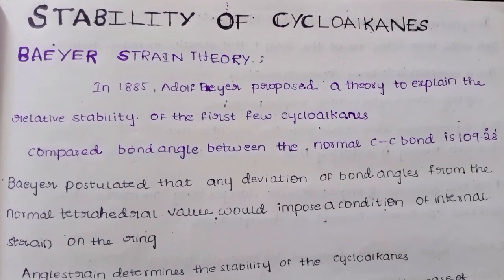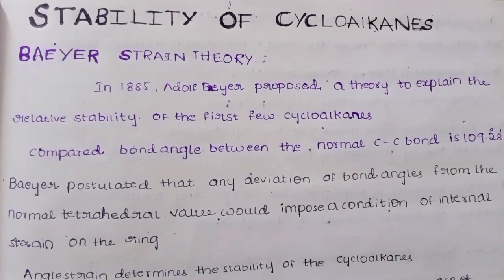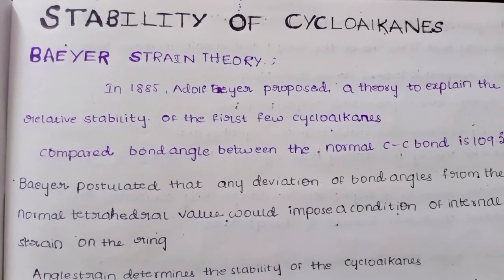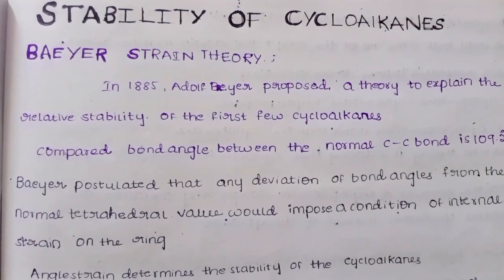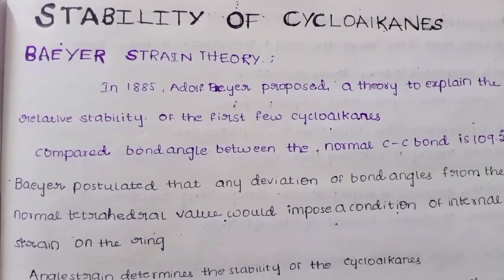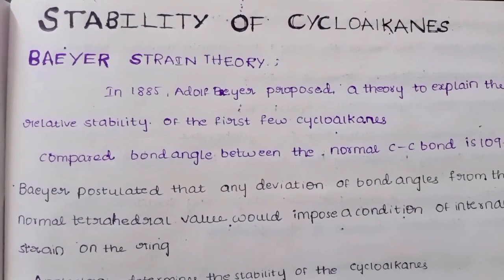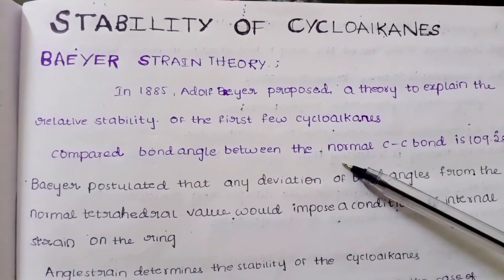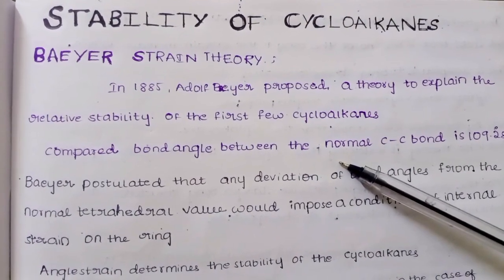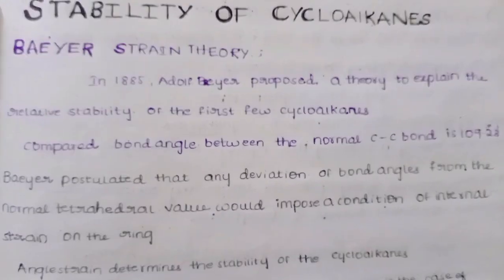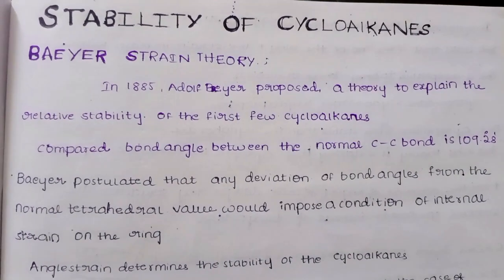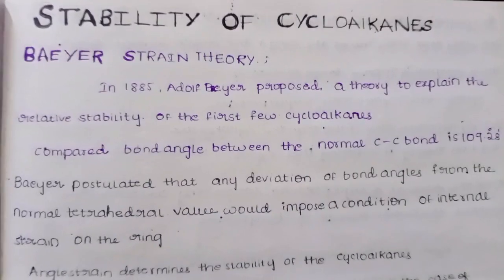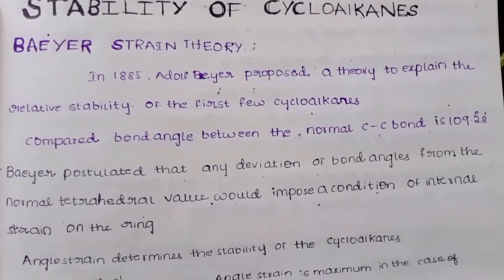Today's topic is the stability of cycloalkanes. In previous videos I have explained what cycloalkanes are, the preparation of cycloalkanes, and the chemical properties of cycloalkanes. In this video I want to explain the stability of cycloalkanes. There are three theories which explain the stability of cycloalkanes: Baeyer strain theory, molecular orbital theory, and Sachse-Mohr theory. This is an important question that carries five to ten marks.